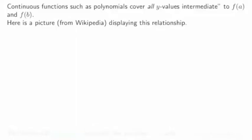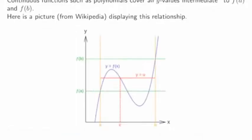Here's a picture from Wikipedia displaying this relationship. In this picture, the horizontal green lines represent f(a) and f(b), where f(b) is at the top and f(a) is below. Considering any y value between f(a) and f(b) — for example, the y value u represented by a horizontal red line — the graph in blue is a continuous function and that graph has to have some x value c whose y value is u.